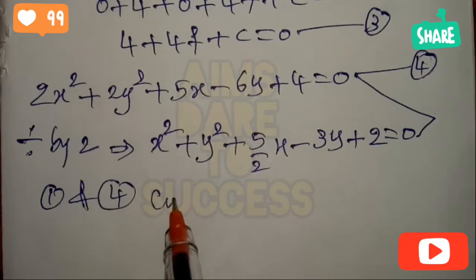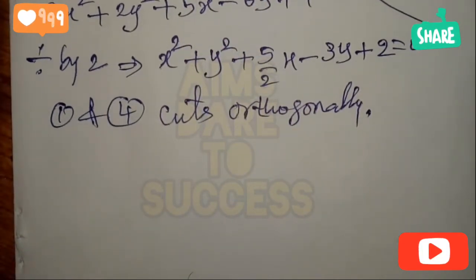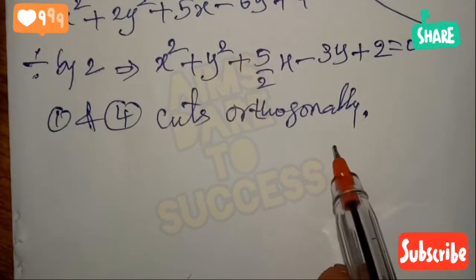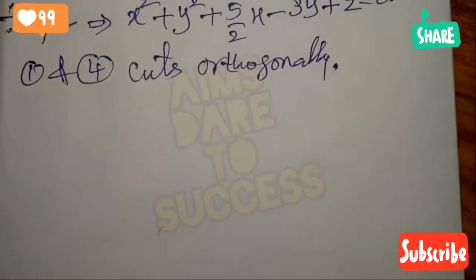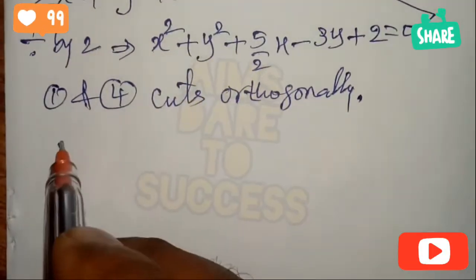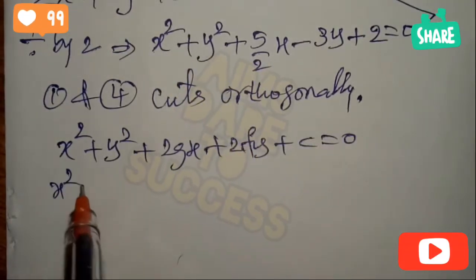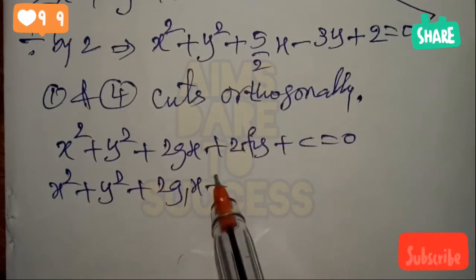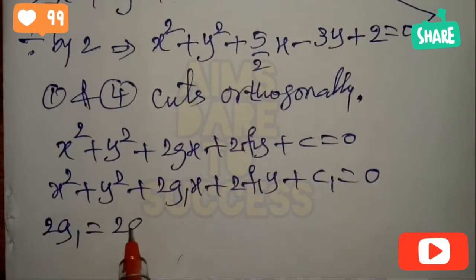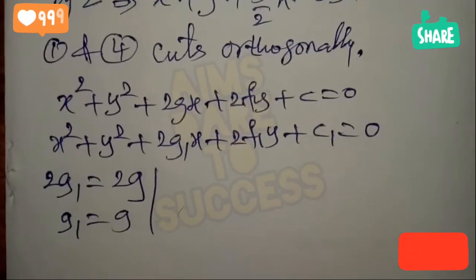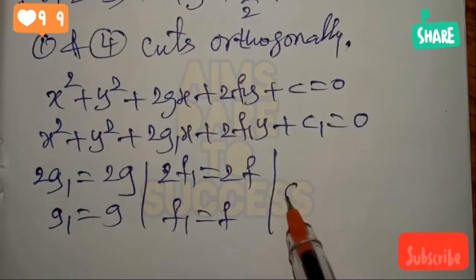Equation 1 and equation 4 cut orthogonally. Equation 1 is x² + y² + 2gx + 2fy + c = 0, which is in the form x² + y² + 2g₁x + 2f₁y + c₁ = 0. Comparing coefficients: 2g₁ = 2g, so g₁ = g; comparing y-coefficients: 2f₁ = 2f, so f₁ = f; and constant term c₁ = c.